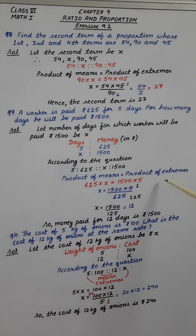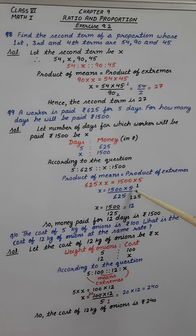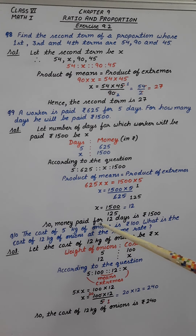Using the formula, product of means is equal to product of extremes: 625 multiplied by x is equal to 1500 multiplied by 5. Finding the value of x: 1500 multiplied by 5 upon 625. Reducing by 5 gives 1500 upon 125, and the answer is 12. So money paid for 12 days is Rs. 1500.